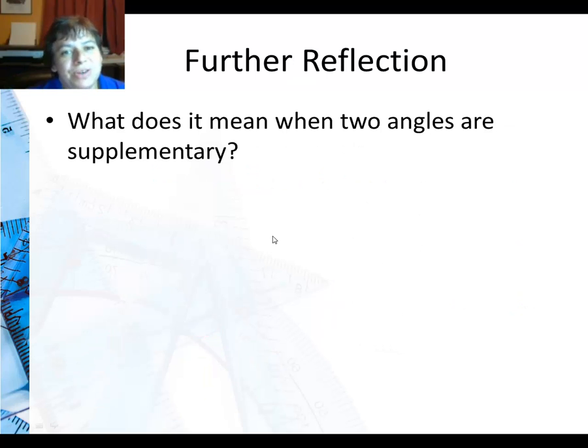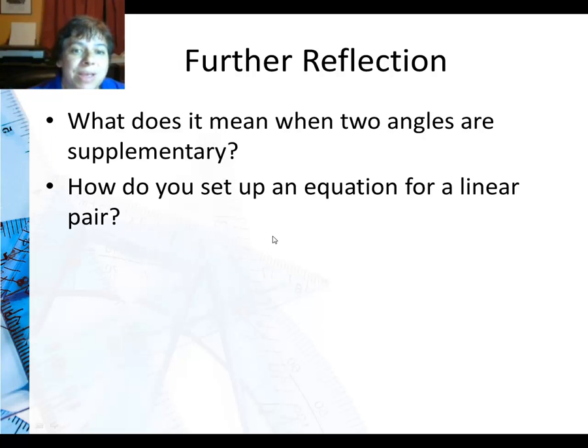So for further reflection, what does it mean when two angles are supplementary? Well, basically, honestly, it means that they add to 180 degrees. And how do you set up an equation for a linear pair? Well, remember the first angle plus the second angle must equal the total. And if it's a linear pair, the total will always be what?